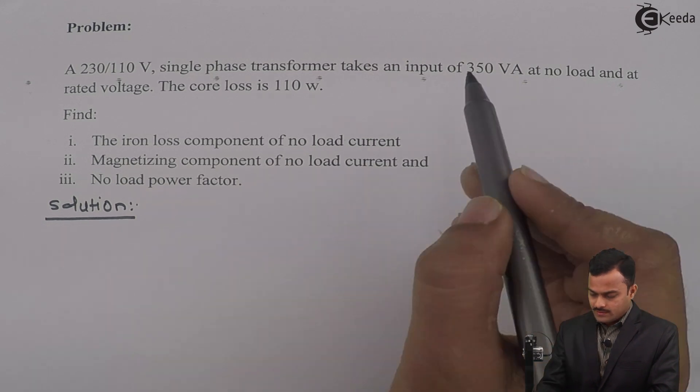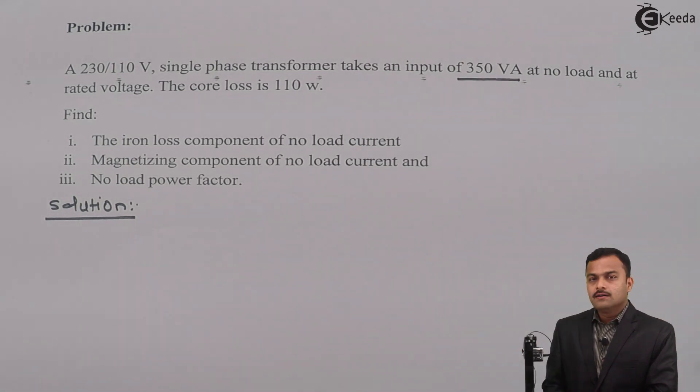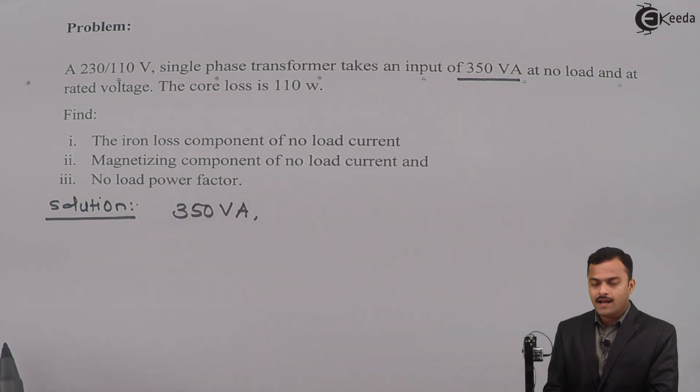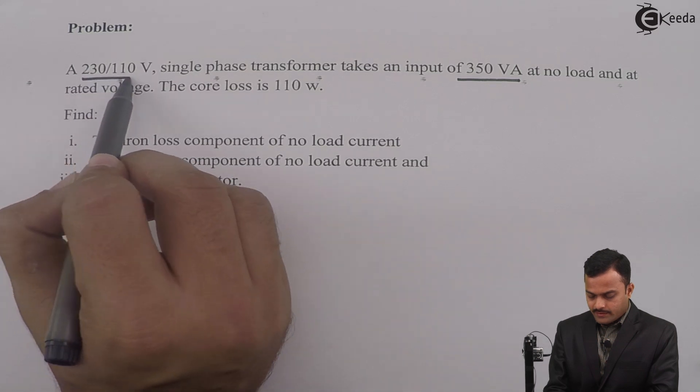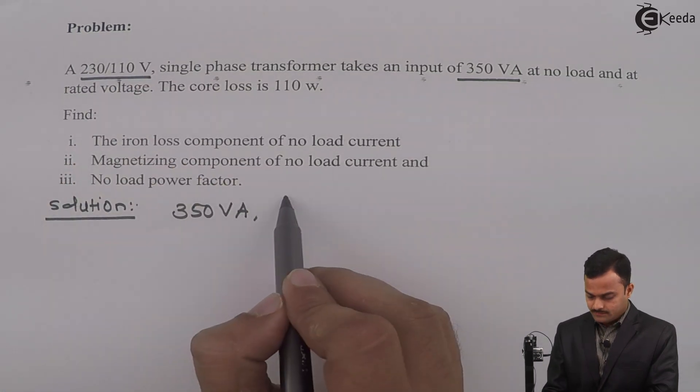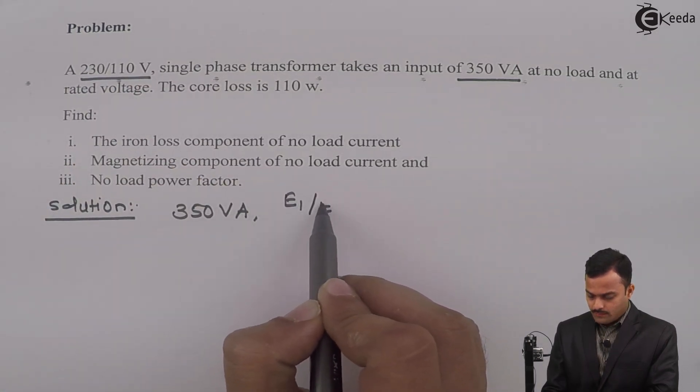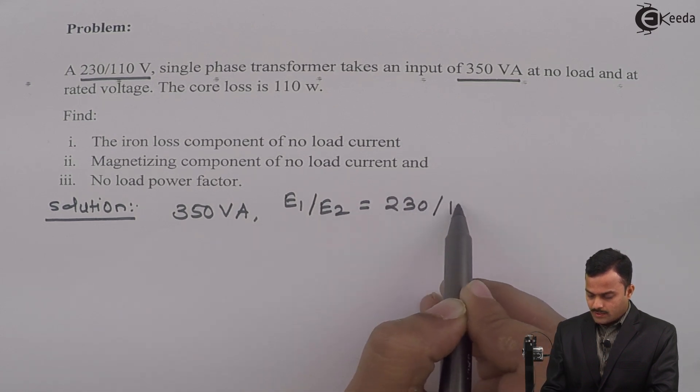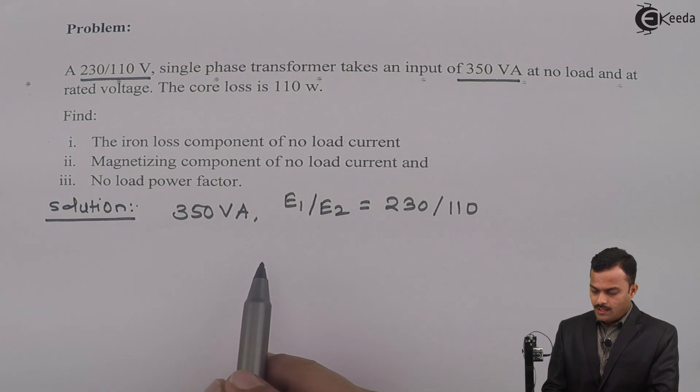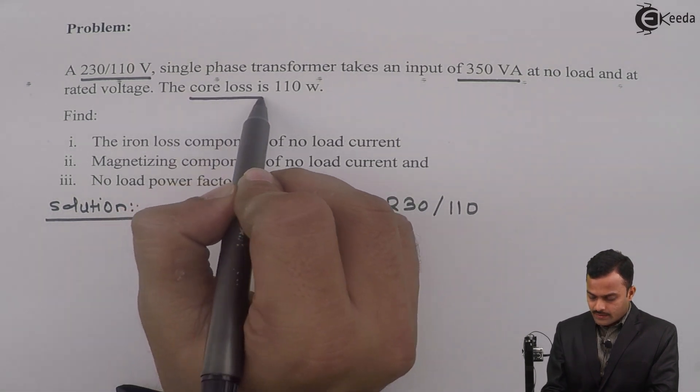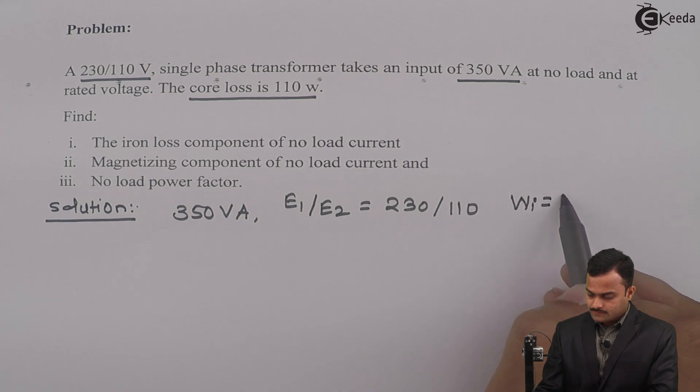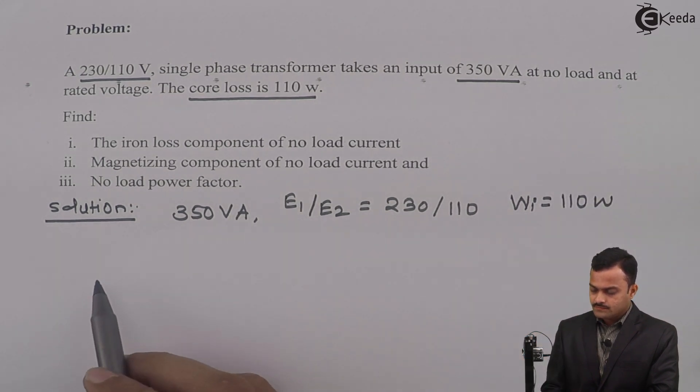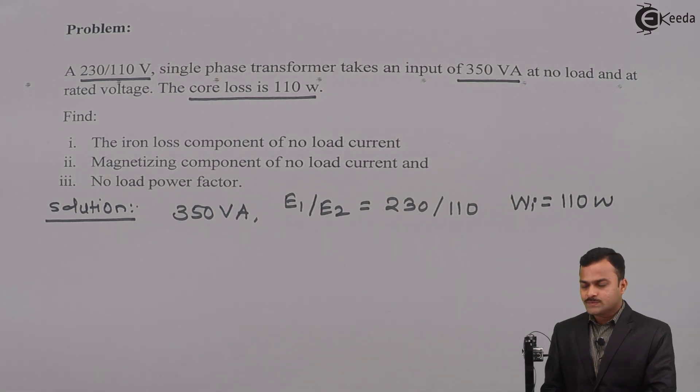First I will list out the things given. Here transformer rating is given 350 VA, and ratio of EMFs are given: E₁/E₂ = 230/110, and core loss is given W_i = 110 watt.